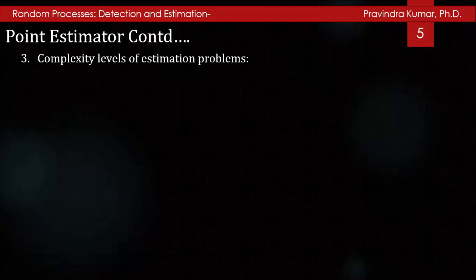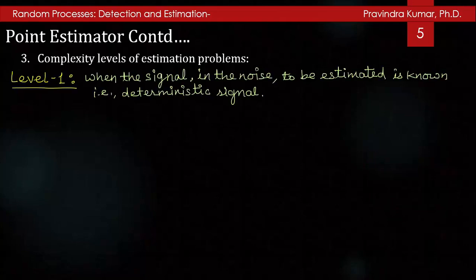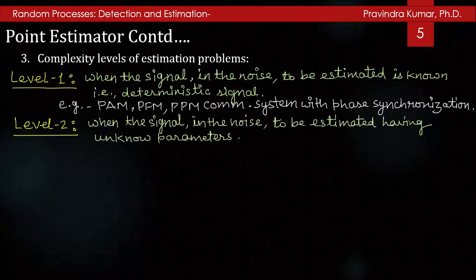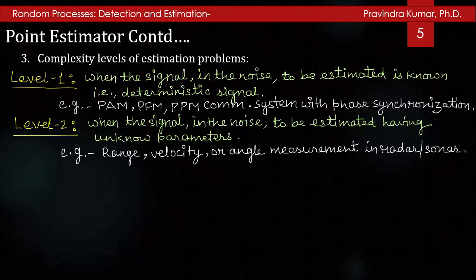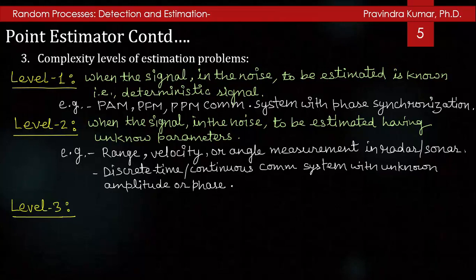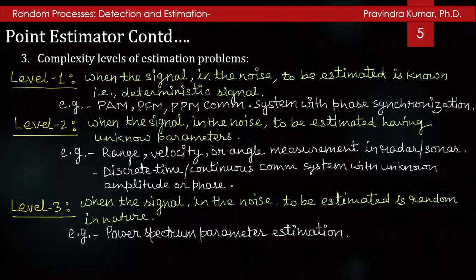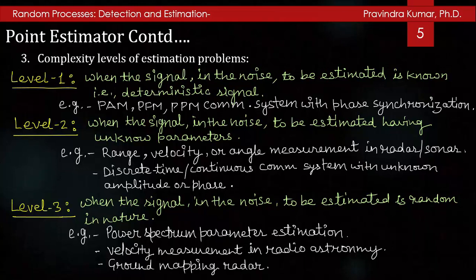There are three levels of complexity in estimation problems. Level one: when the signal in the noise to be estimated is a known deterministic signal — for example, pulse position modulation or phase synchronization. Level two: when the signal has unknown parameters — for example, range, velocity, or angle measurement in radar or sonar. Level three: when the signal parameter to be estimated is random in nature — for example, power spectrum parameter estimation, velocity measurement in radio astronomy, and ground mapping radar.